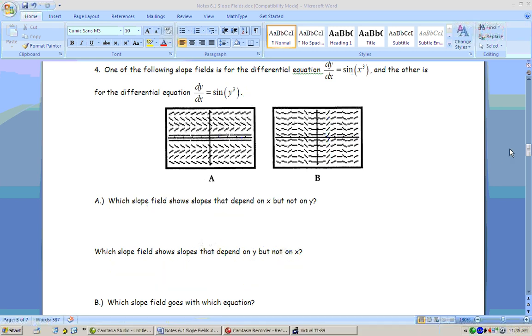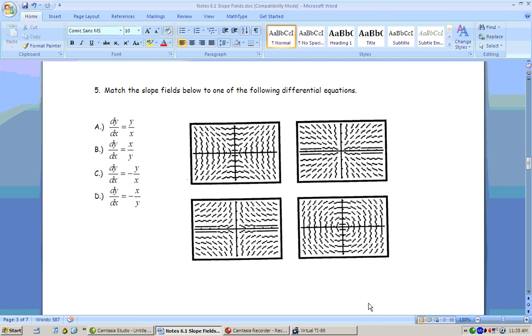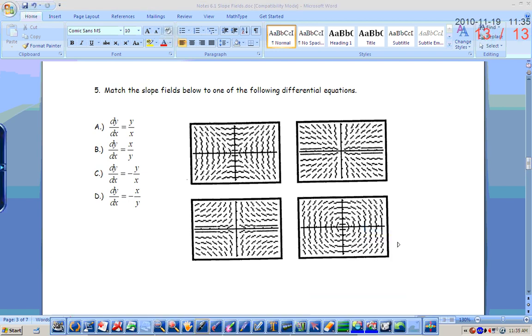Alright, so that brings us to number five, which we're going to blow through, because you're so good at this now. We're going to match the differential equation with the slope field. Now, unfortunately, all of these have both x's and y's. If some of them just had x's, then you could look for slope fields that had vertical stripes, if some of them just had y's, etc.